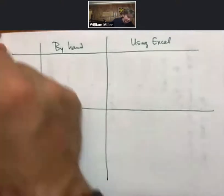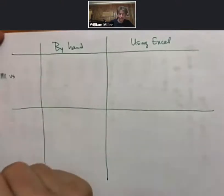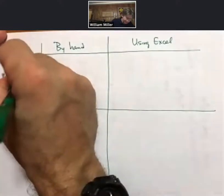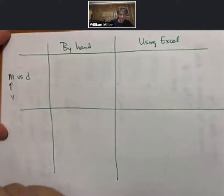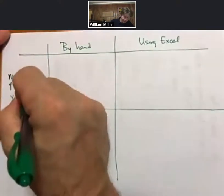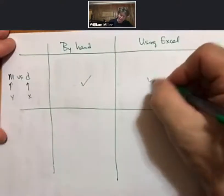One of them is going to be molarity versus density. And molarity is going to be on your y-axis while density is going to be on your x-axis. So you'll make that by hand and using Excel.